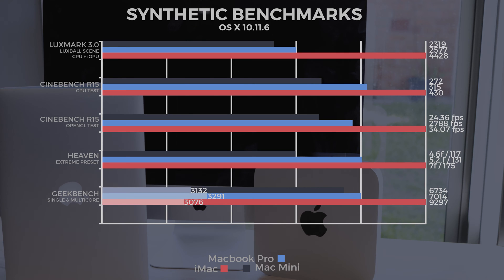Here we ran the synthetic benchmarks. The first test was LuxeMark III — with the CPU and iGPU included on the LuxeBall scene, the iMac blew the other two apart by nearly double. Cinebench R15 CPU test: the iMac took the lead again due to its quad-core performance, but it's not that far ahead. Cinebench R15 OpenGL: iMac leads again. Heaven GL on the Extreme preset: the iMac ran at 7 frames per second — not ideal, but with no dedicated GPU, that's what you get. On Geekbench single and multi-core, the MacBook Pro took out the best single-core performance by a little, and the iMac took multi-core due to its quad-core.